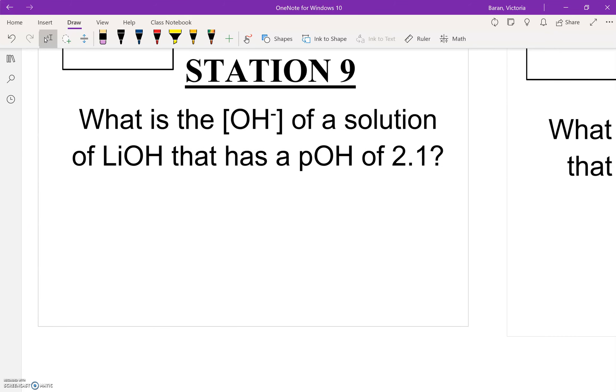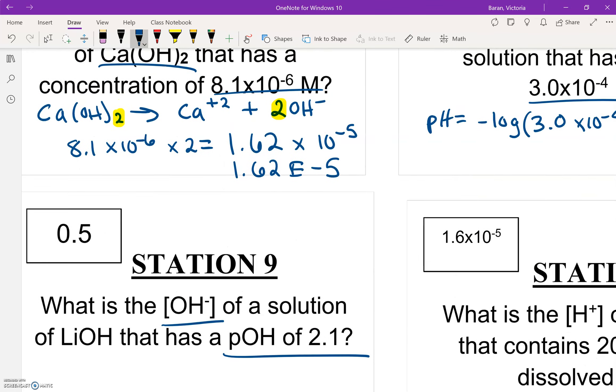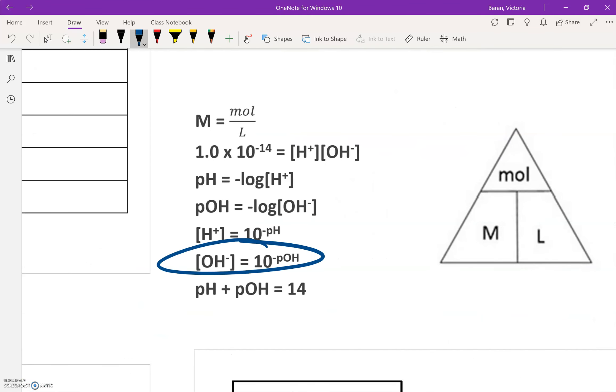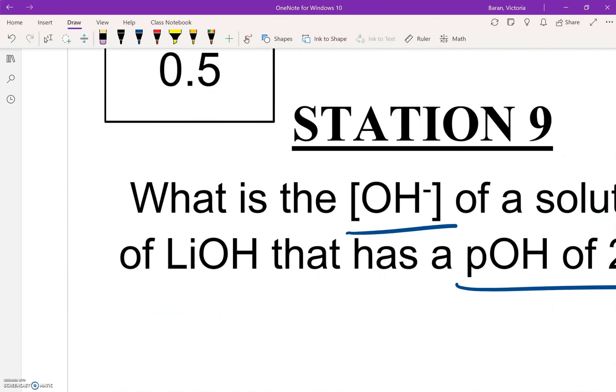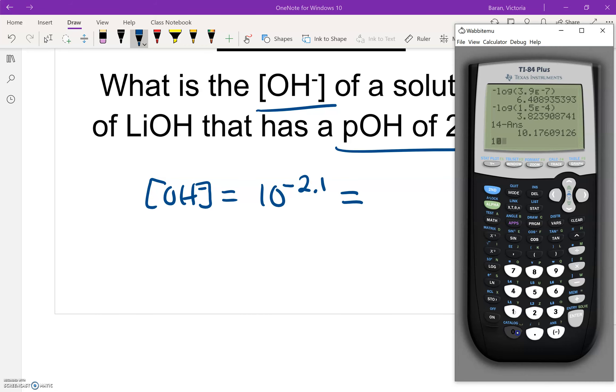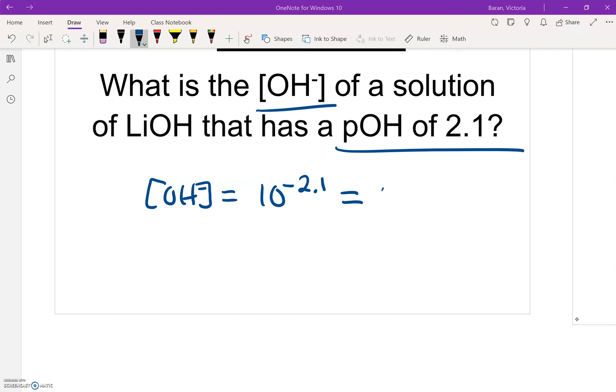So this one's easy. It says, what is the [OH-] concentration? And they actually give us the pOH. So if I have the pOH, I can easily plug that in to solve for the OH minus concentration. So we're going to do the [OH-] equals 10⁻ᵖᴼᴴ, which they told us is 2.1. So 10, we're going to use that caret symbol, to the negative 2.1 power, and we're going to get 0.008 as our answer.